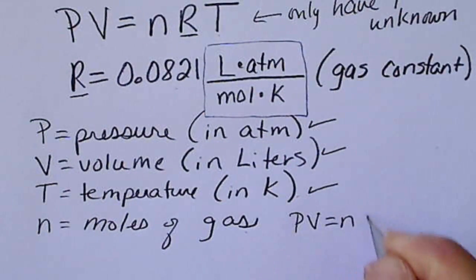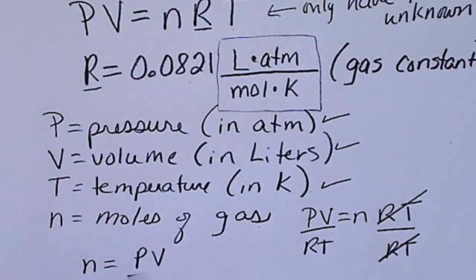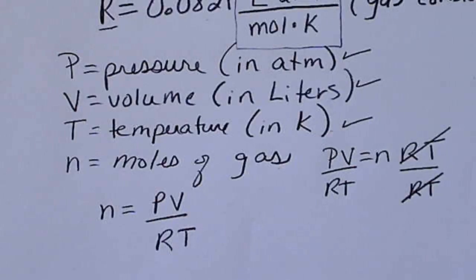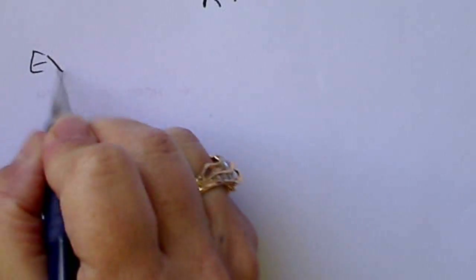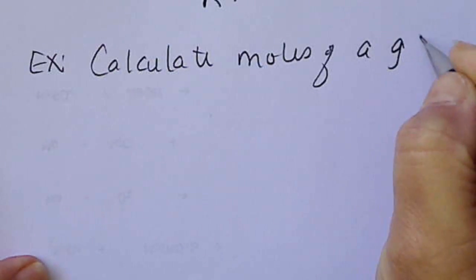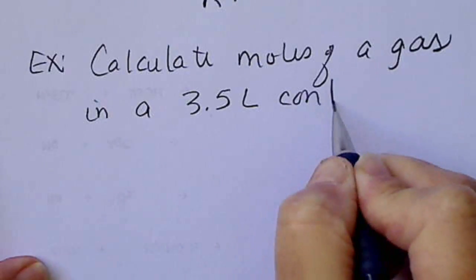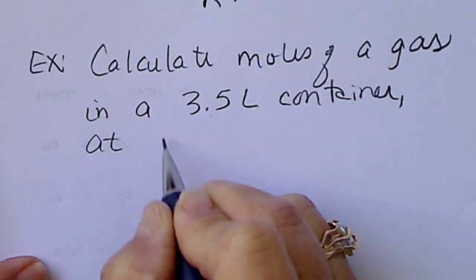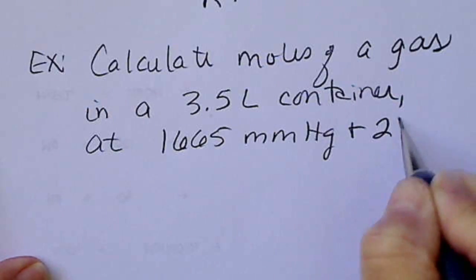So if we have PV equals nRT, we would divide both sides by RT. I'm going to give us an example problem, and we'll see that we've got to convert all of our units and then solve for n. We'll calculate the moles of a gas, and it does not matter what the gas is, in a 3.5 liter container at 1,665 millimeters of mercury and 21 degrees Celsius.